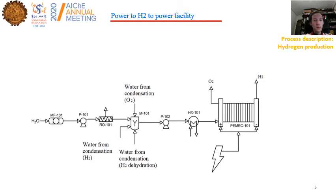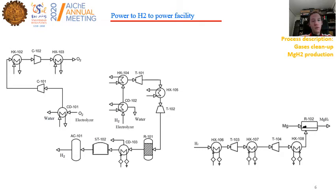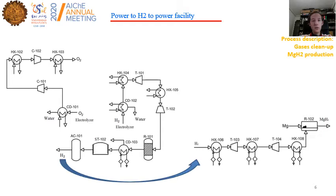First, the water is cleaned up and prepared. Later, we are going to use solar or wind energy in order to split that water. We can produce oxygen, which is going to be an asset for the process, as well as hydrogen. The oxygen from the electrolyzer is going to be compressed and sold to the market, while the hydrogen is first processed to remove traces of oxygen, then dehydrated before being stored over a short period of time to mitigate variability, and later used for the production of magnesium hydride.